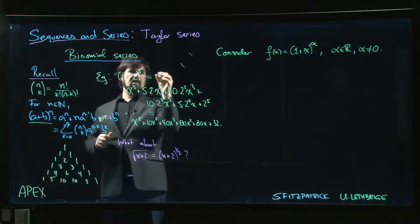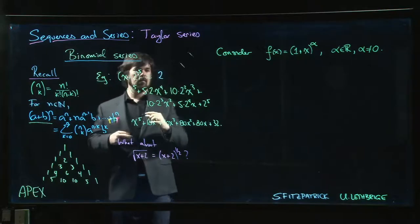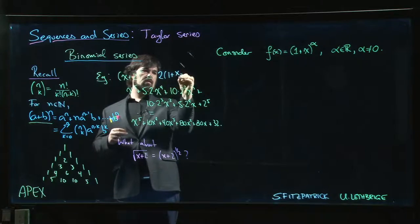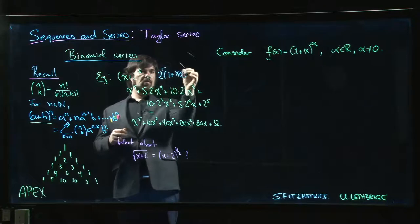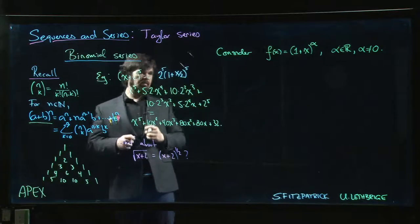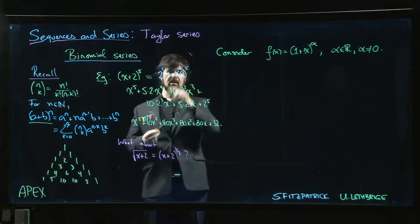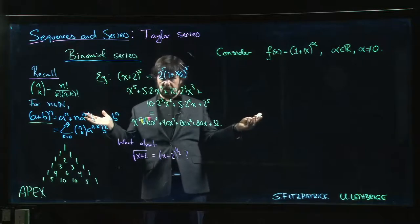So you'd write this as say 2 times 1 plus x over 2, and you raise that to the fifth power. So you get 2 to the 5 times 1 plus x over 2 to the fifth power. Then you'd expand things in powers of x over 2, multiply everything by 2 to the fifth at the end, and of course you get the same result.